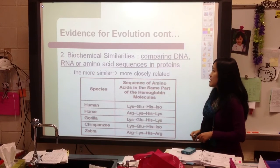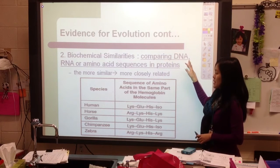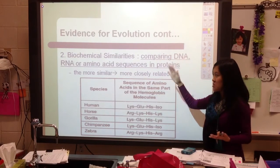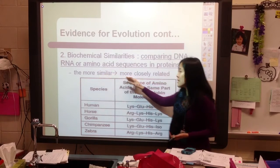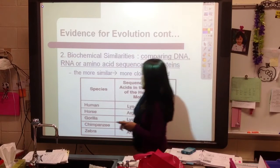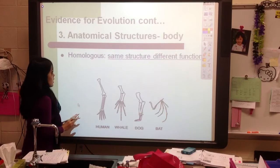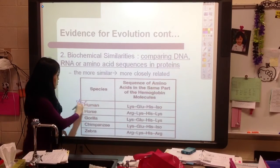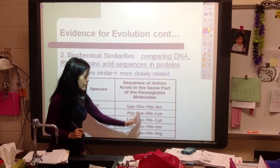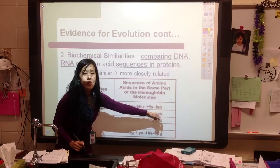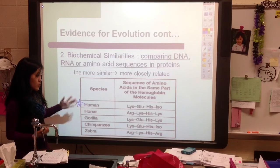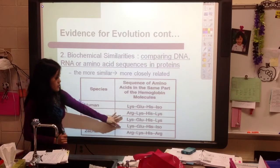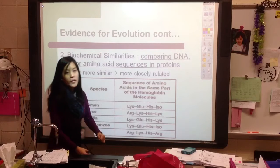The second type of evidence is biochemical similarities — comparing DNA, RNA, or amino acid sequences. The more similar your DNA is, the more similar your amino acids and proteins will be, and the more closely related you are. Looking at five different species, put a star by humans and figure out which one is most closely related by examining the first through fourth amino acids down the column. Humans are actually most closely related to the chimpanzee — those four amino acids are very, very similar.